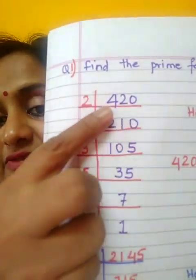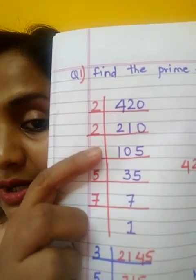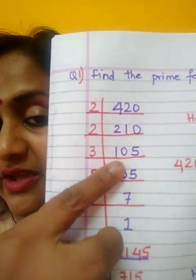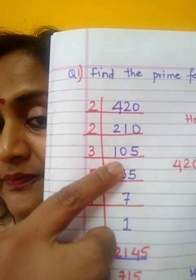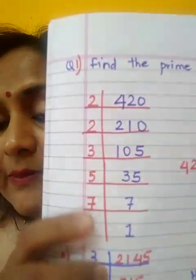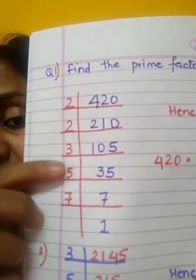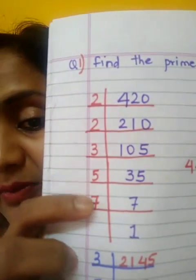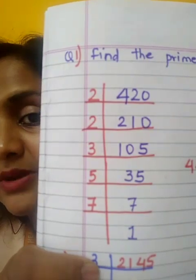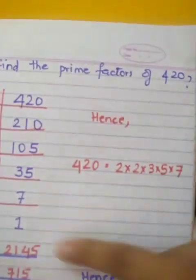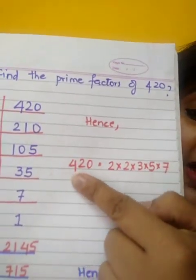Divide the given number by 2. Further, if it is divisible by 2, continue with that method. We have got 105 here. But we cannot divide this number by 2 since it is an odd number, so I have divided it by 3 by applying the divisibility rule. By continuing this method, we find that all the numbers we have taken are prime numbers — 2, 3, 5 and 7. If we multiply all these numbers, we get 420 again. So these are the prime factors of the given number.